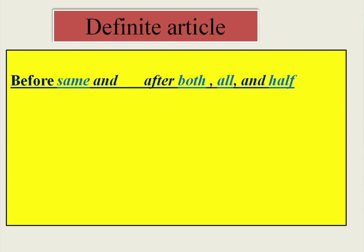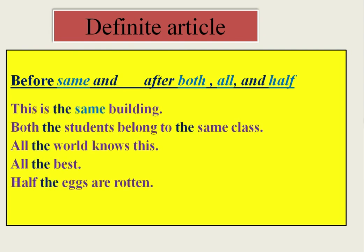Some important uses of the definite article: we use 'THE' before the word 'same' and after the words 'both,' 'all,' and 'half.' For example: 'This is the same building.' 'Both the students belong to the same class.' 'All the world knows this.' 'All the best.' 'Half the eggs are rotten.' In these sentences, 'THE' is used before 'same' and after 'both,' 'all,' and 'half.'